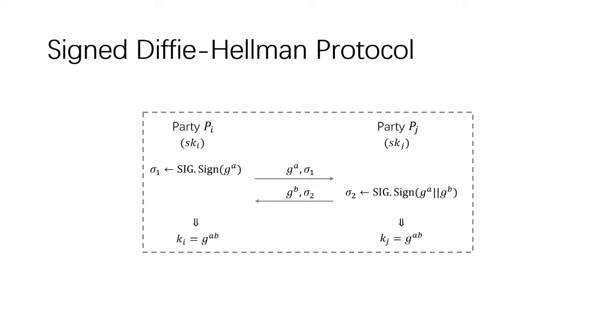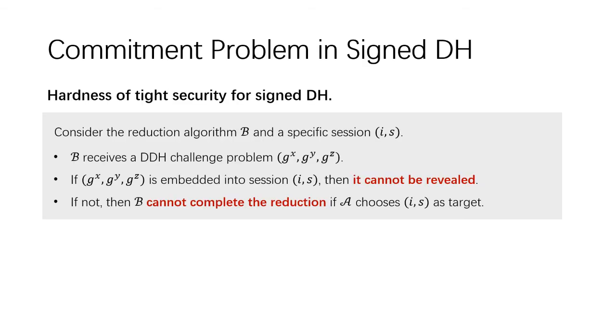Well, a natural idea for AKE is the well-known signed Diffie-Hellman protocol as shown in this figure. Party Pi sends g^a and its signature sigma_1 in the first pass. And then, party Pj responds with g^b and signature sigma_2. If the verification of signature is passed, then both Pi and Pj can compute the session key g^ab. However, it's hard for the signed DH protocol to achieve tight security due to the following commitment problem.